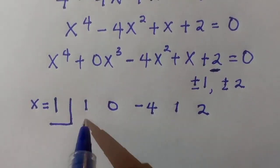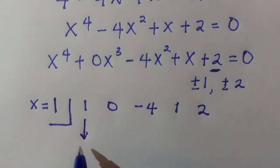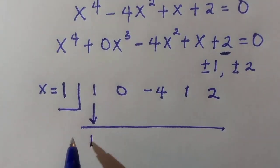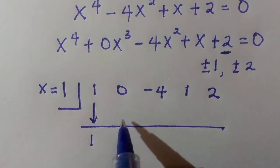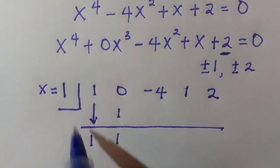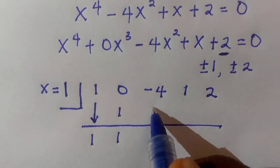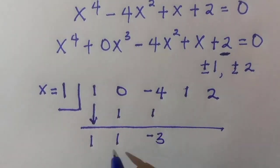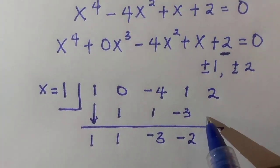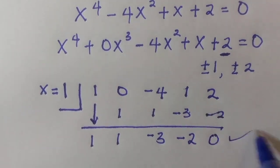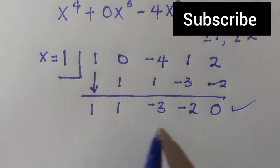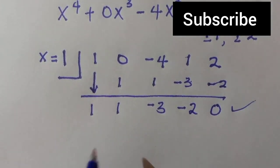We want to reduce this to a cubic equation. The first term is 1; multiplying 1 by 1 gives 1, so 0 plus 1 is 1. Again 1 multiplied by 1 is 1; minus 4 plus 1 is minus 3. Then 1 multiplied by minus 3 is minus 3, giving minus 2 here, and minus 2 plus 2 gives 0. Getting 0 at the last step means we can proceed.